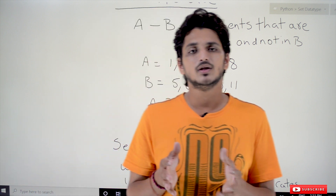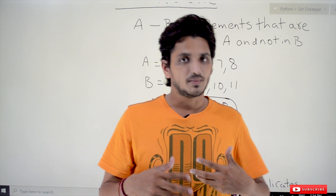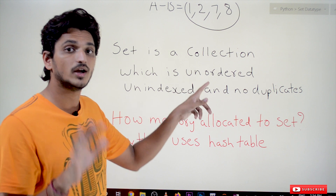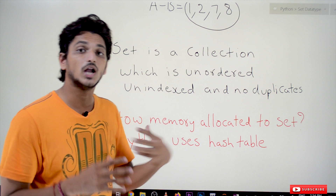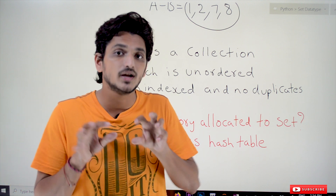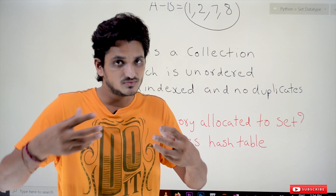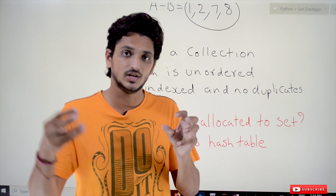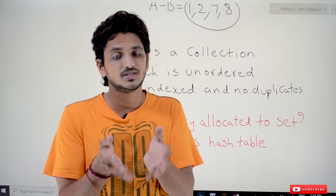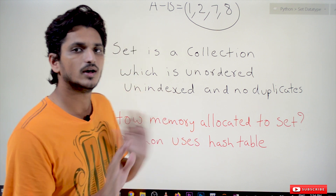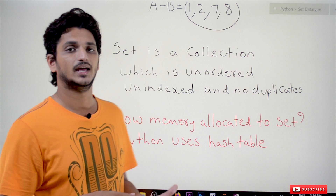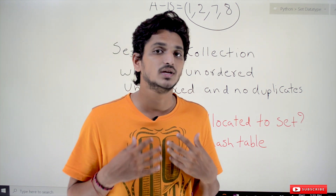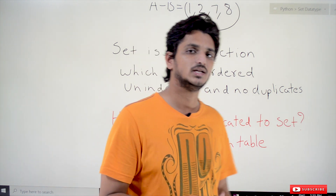Set data type in Python is defined to use these set operations. A set in Python is a collection which is unordered, unindexed, and allows no duplicate values. Unlike list, which is ordered and maintains element order, a set does not maintain that order. Unlike list, set elements are not given index values like 0th, 1st, 2nd position.